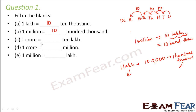1 crore is equal to dash 10 lakhs. When you remember this, after 10 lakhs you have 1 crore. So 1 crore and 10 lakhs have just one jump in between, so this would be 10 — 10 lakhs.